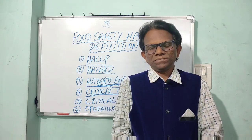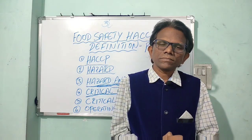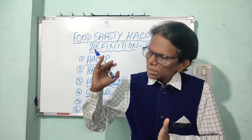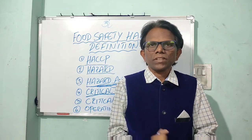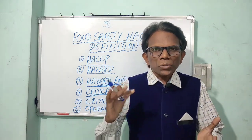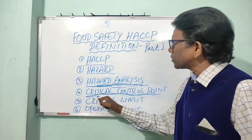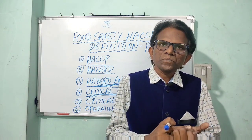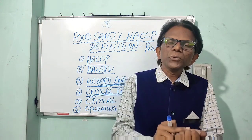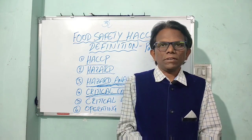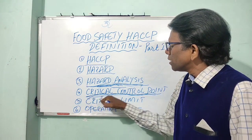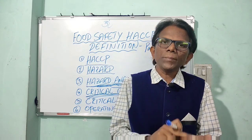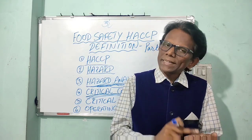What is a critical control point? It is a process step — a point such as a trawler receiving stage, a metal detection stage, or a packing stage — any process step at which control can be applied and a food safety hazard such as biological, chemical, or physical can be prevented, eliminated, or reduced to an acceptable level.